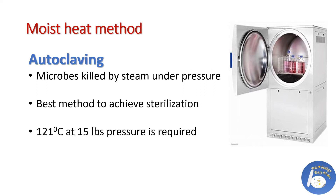Autoclaving is the best method to achieve complete sterilization. In an autoclave, steam is generated under high pressure in an airtight chamber; in this condition, all forms of microbial life are killed. 121 degrees Celsius and 15 lbs per square inch pressure is generally required to achieve sterilization. This method is used to sterilize various types of media and liquids, and also to dispose of or destroy used materials. For details on the principle, discovery, procedure, types, and precautions of autoclaving, check the description box below.